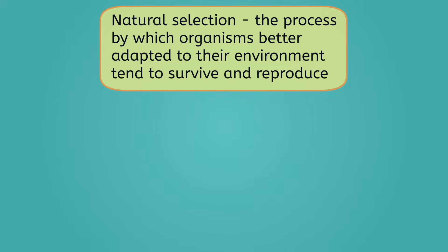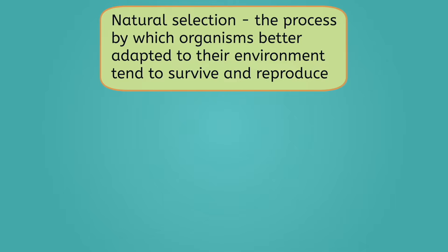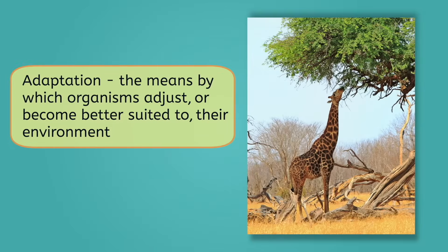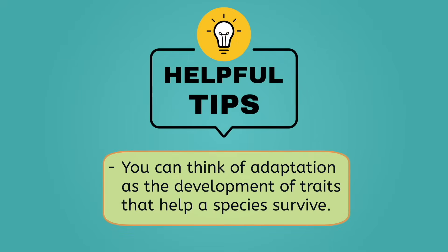Natural selection is the process by which organisms better adapted to their environment tend to survive and reproduce. Living organisms are highly motivated to eat when they're hungry and to avoid being eaten themselves. To accomplish these things and successfully reproduce, species must develop adaptations to survive. An adaptation is the means by which organisms adjust or become better suited to their environment. For example, this giraffe's long neck allows it to reach food it wouldn't have access to otherwise. You can think of adaptation as the development of traits that help a species survive.